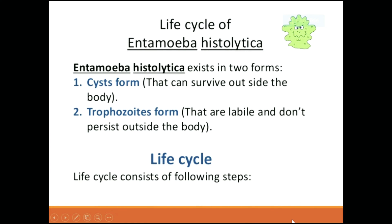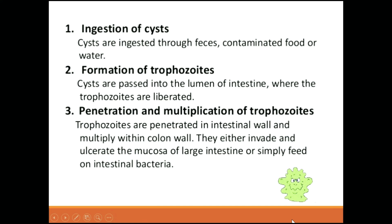The first step is ingestion of cysts. Cysts are ingested through faeces-contaminated food and water via the fecal-oral route, which will infect other people. The second step is formation of trophozoites — cysts pass into the lumen of the intestine where trophozoites are liberated. The third step is penetration and multiplication of trophozoites, increasing their number.